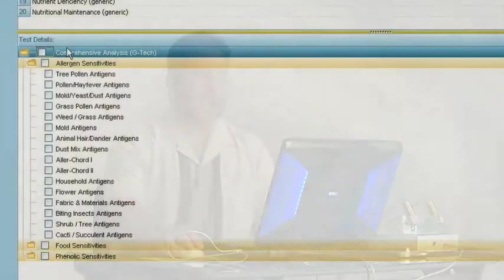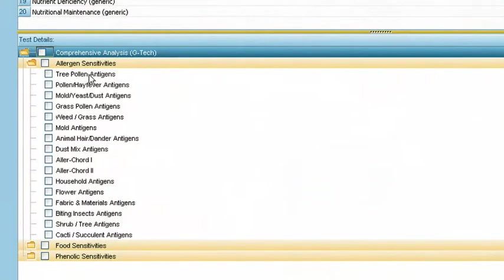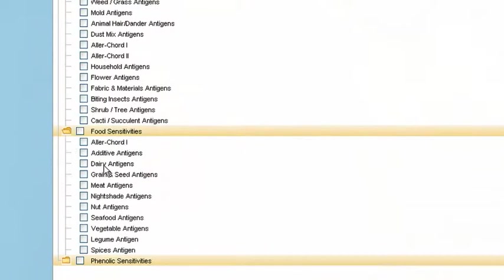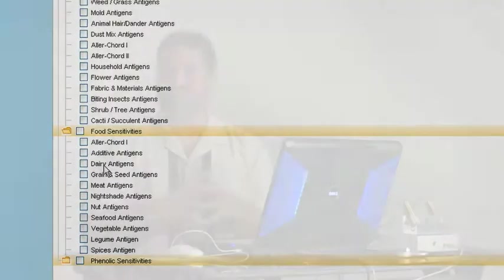You'll see that we have categories for environmental areas such as tree pollens. This desensitizes all the families of trees, whereas we could run the environmental sensitivity list and identify specifically which tree pollens to you as an individual are showing an issue. We have the same thing for foods. If dairy comes up, this will detox the whole family.